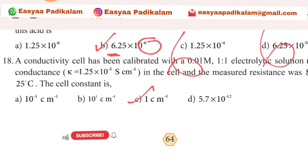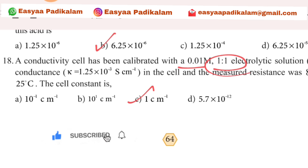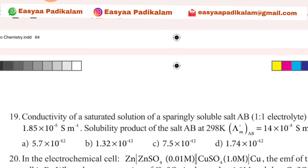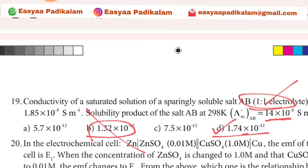Eighteenth question: a conductivity cell has been calibrated with 0.01 mol. 1 is to 1. Nineteenth question: similar. 1 is to 1. 10 power minus 12. 1 is to 1.